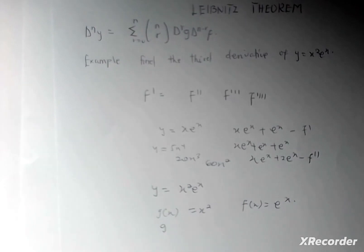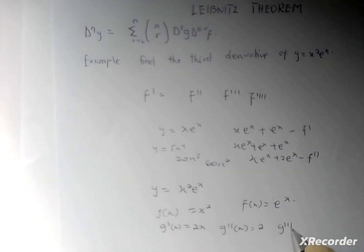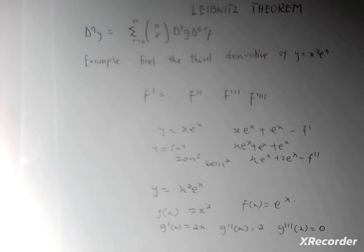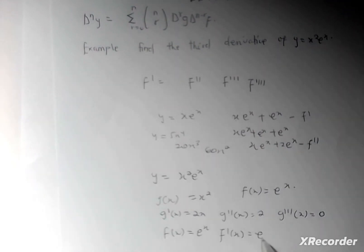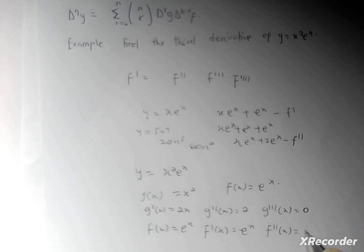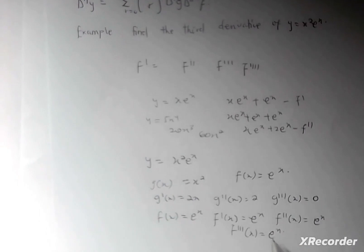Since you have been asked to find the third derivative, you find g'(x) = 2x, g''(x) = 2, and g'''(x) = 0. We are done differentiating g(x) three times. Then for f(x) = e^x: f'(x) = e^x, f''(x) = e^x, and f'''(x) = e^x, since the derivative of e^x is always e^x.